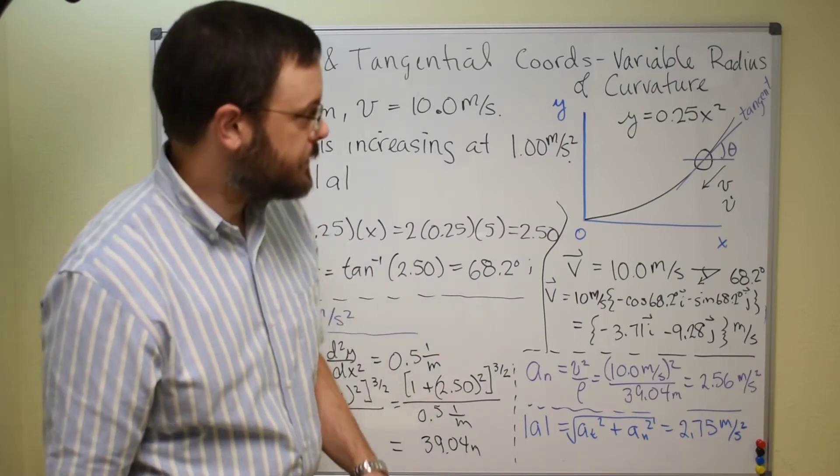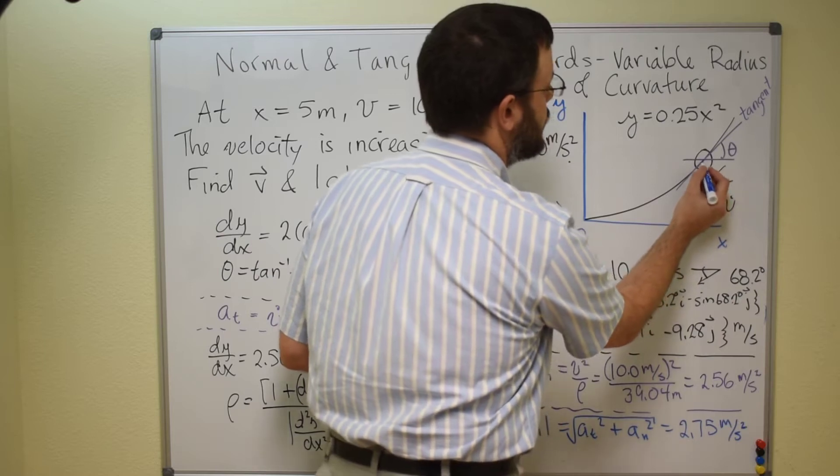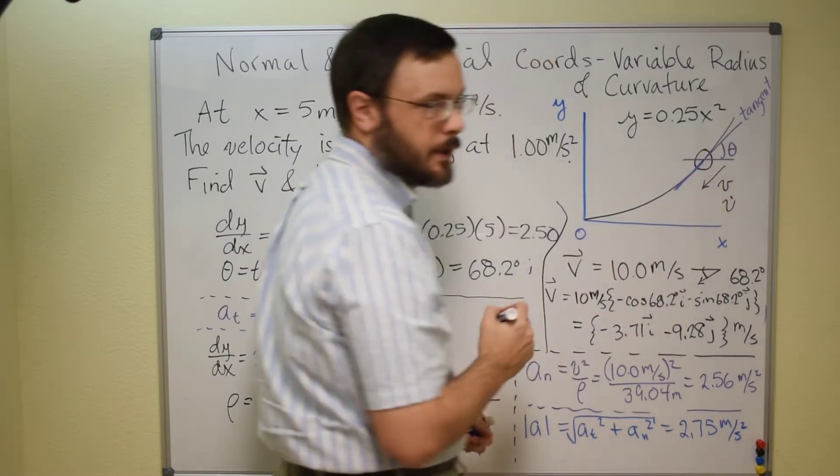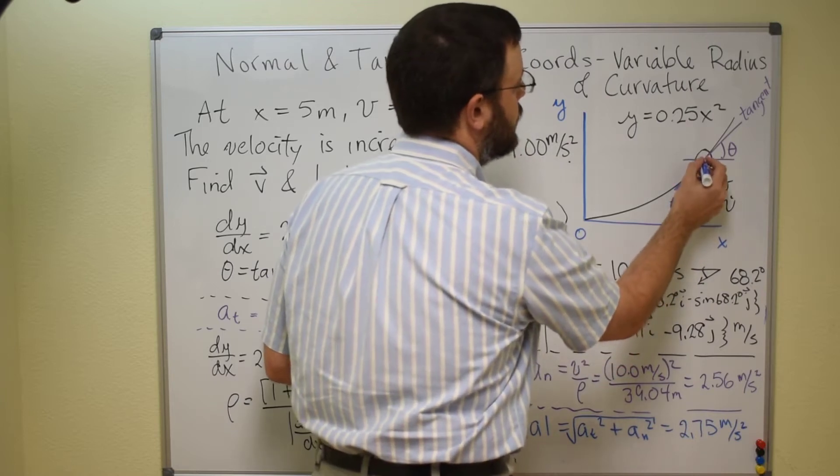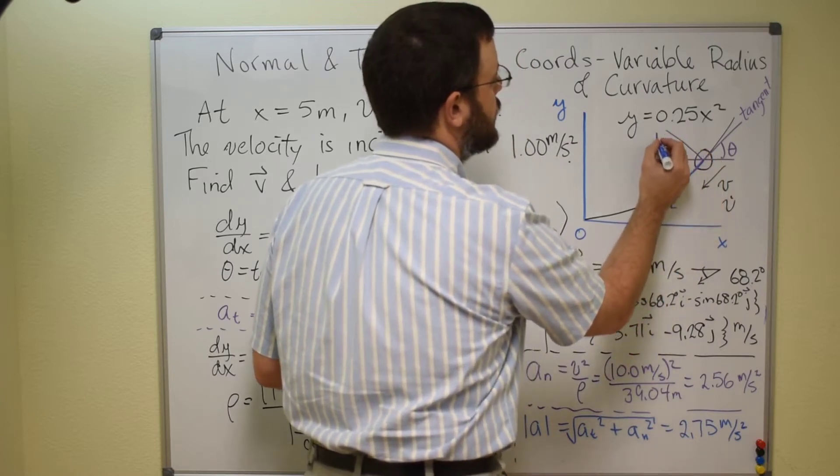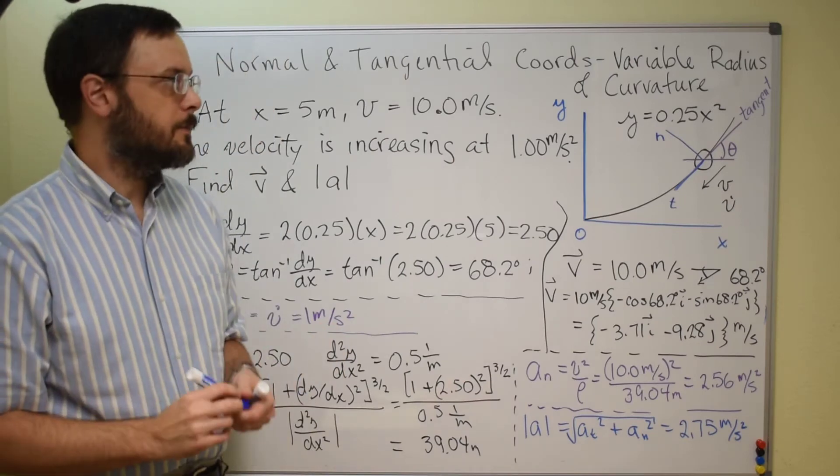And so this establishes a set of coordinates so that we have a tangential direction here that's going tangent along the path, so let's label that t, and then a normal direction that's going in this direction that's going in towards the radius of curvature of the path.